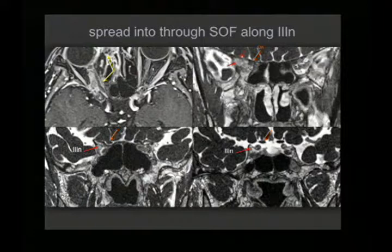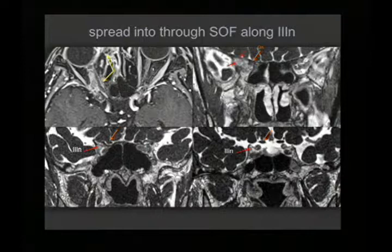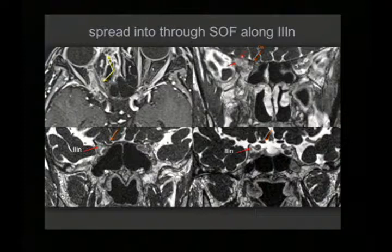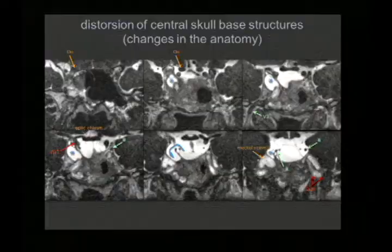This approach can also be used in malignant tumors. Here, a tumor arising from the skin spread through the superior orbital fissure along the third nerve. The patient refused orbit exenteration, and the tumor followed the optic nerve to the orbital apex. Comparing the right and left sides of the third nerve reveals a difference in signal, and the patient received surgery reaching this area.